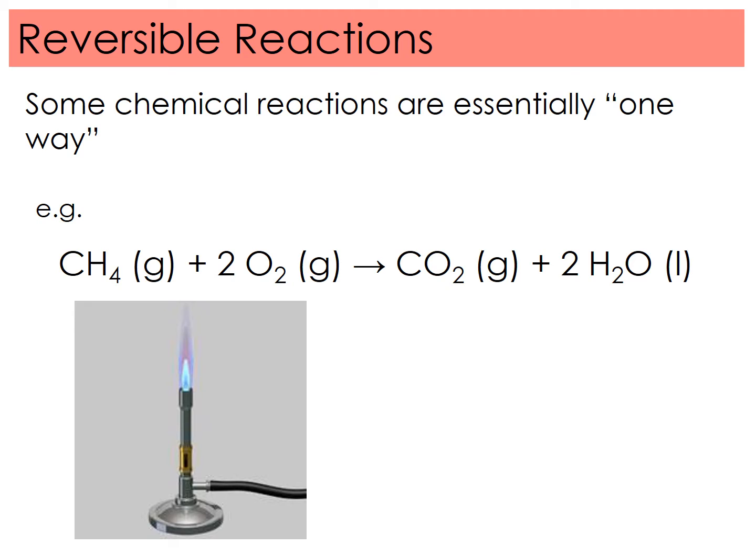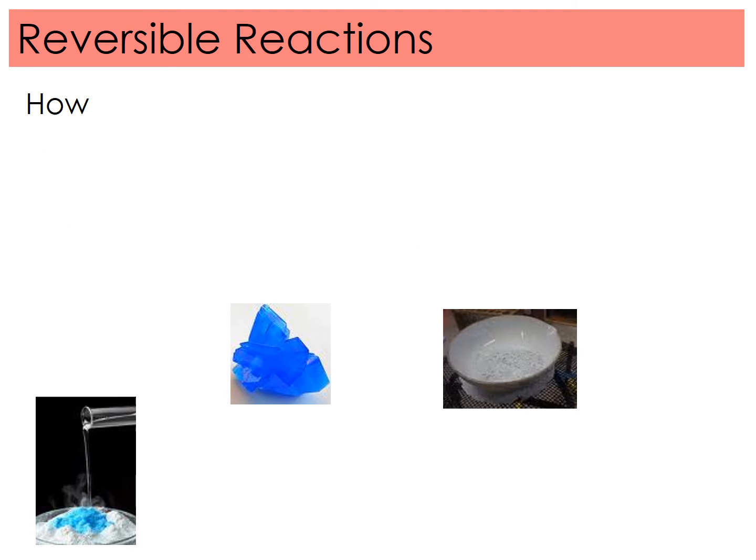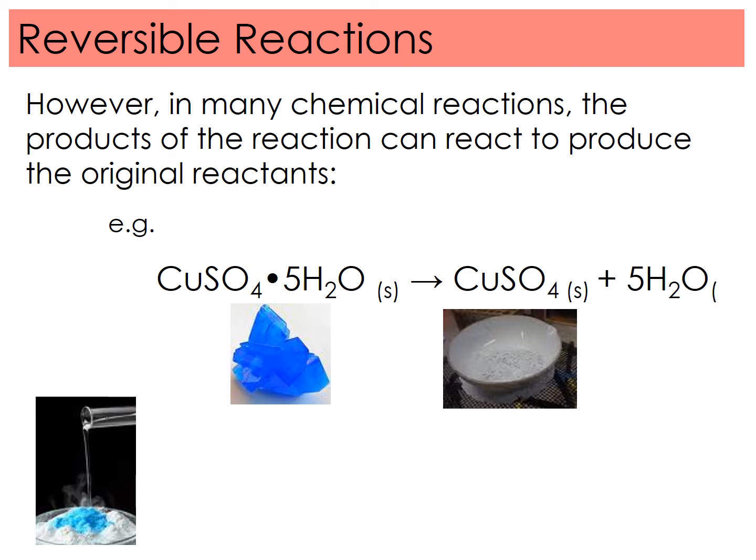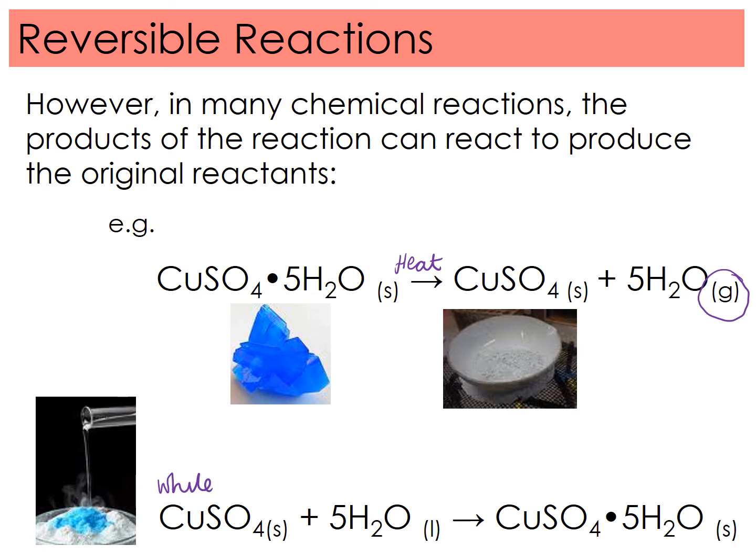At GCSE, you have met before some examples of reversible reactions. Let's have a look at two examples. The first one is this: copper sulfate hydrated can be heated strongly to drive off the water of crystallization, which leaves the system as steam. Then more water could be added to the anhydrous white powder copper sulfate, and that white powder would then turn blue because of the presence of CuSO4, which is now hydrated.